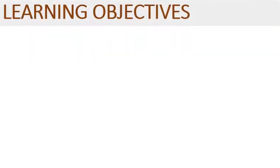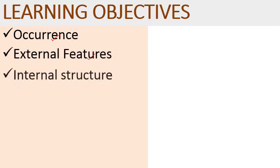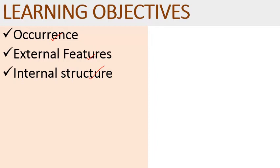Our learning objectives for today: we will discuss its occurrence — where it is found — then its external features, then internal structures in case of Selaginella, including stem, rhizophore, leaves, and root.